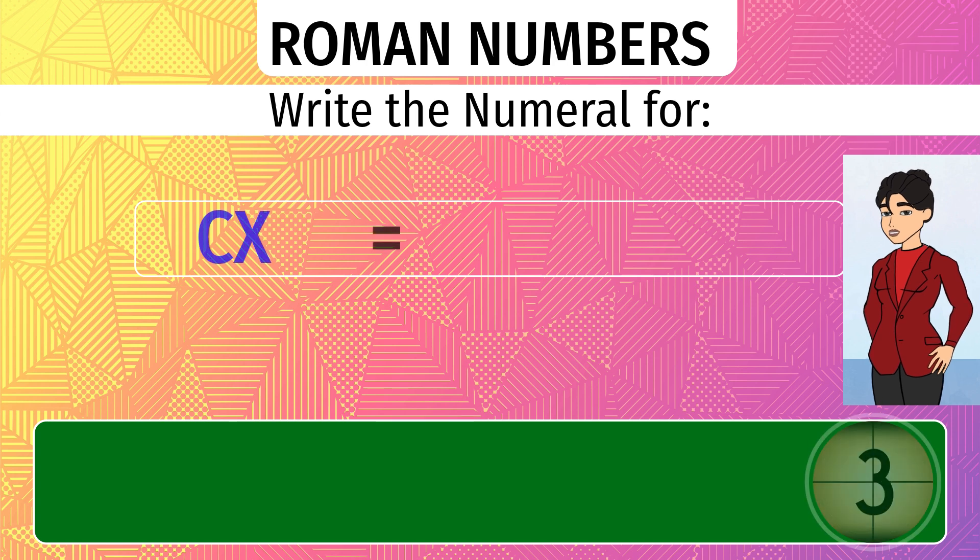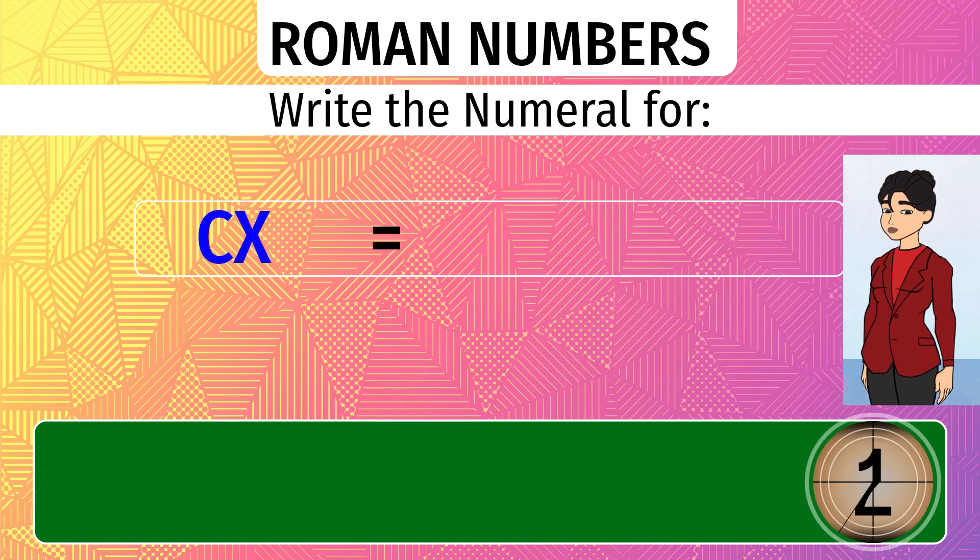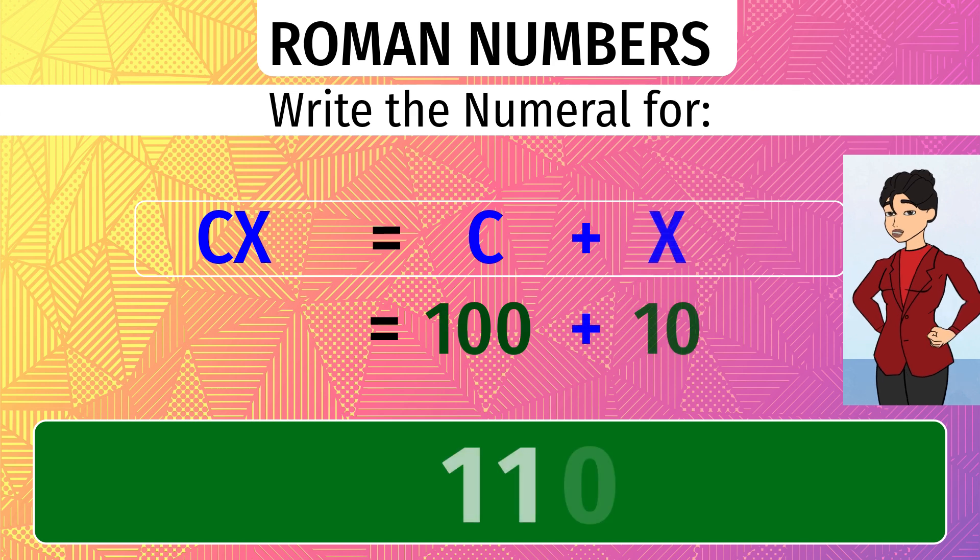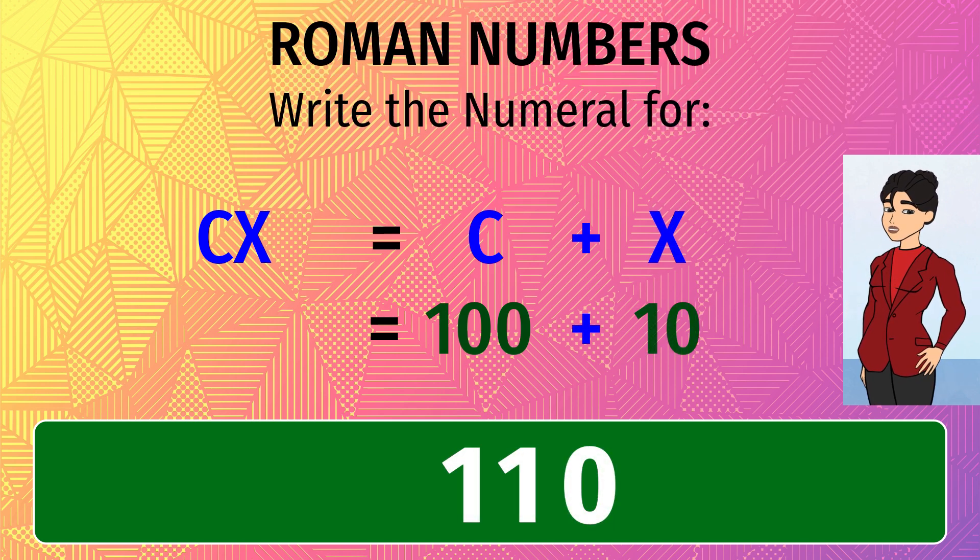What does CX represent? A smaller number in front of a bigger number gets added. So CX is C plus X. The answer is 110.